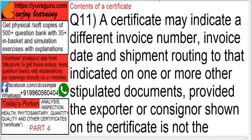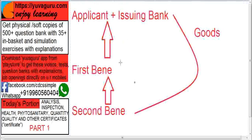Q11: a certificate may indicate a different invoice number, invoice date, and shipment routing to that indicated on one or more other stipulated documents, provided the exporter or consignor shown on the certificate is not the beneficiary. Again, this case happens in transfer LCs. The second beneficiary has sent the documents to the first beneficiary. The first beneficiary replaces the invoice and the draft. So the certificate would contain the consignee name as the first beneficiary, whereas the first beneficiary has replaced the draft and invoice, so the invoice will contain the consignee name as the applicant — these two would be in conflict.